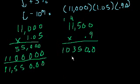And we have one digit behind the decimal point, so we're left with $10,350. And that is choice A.